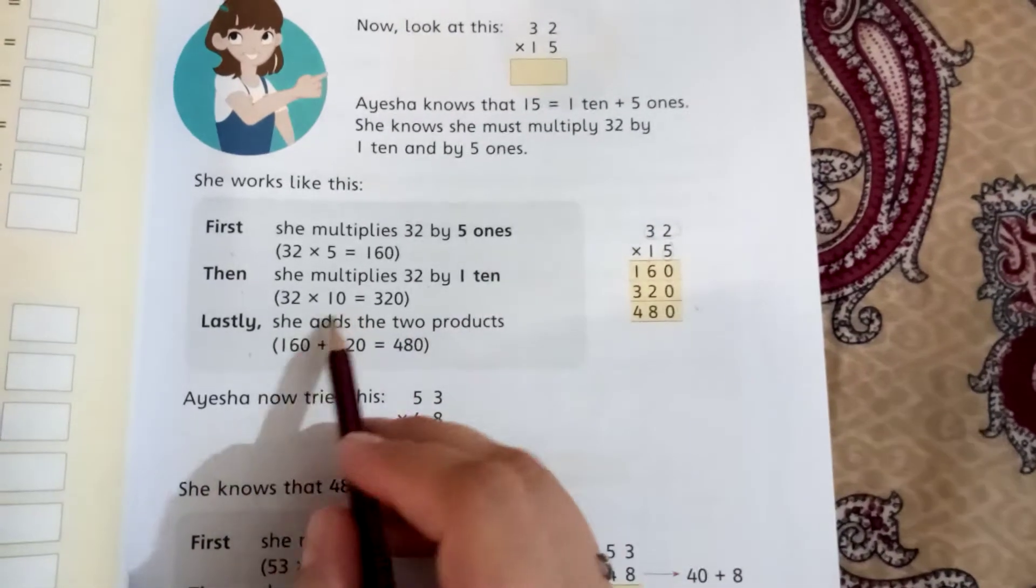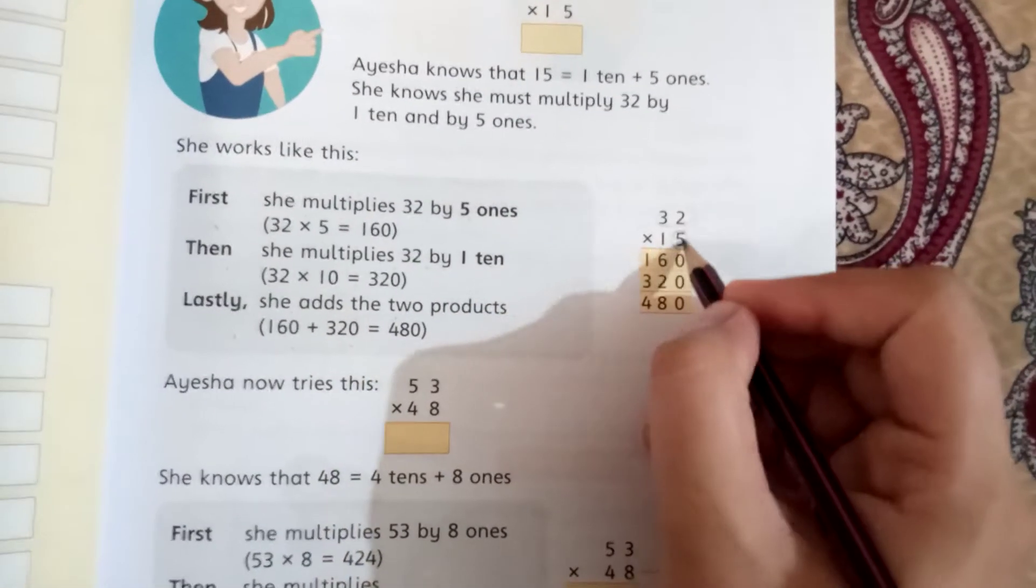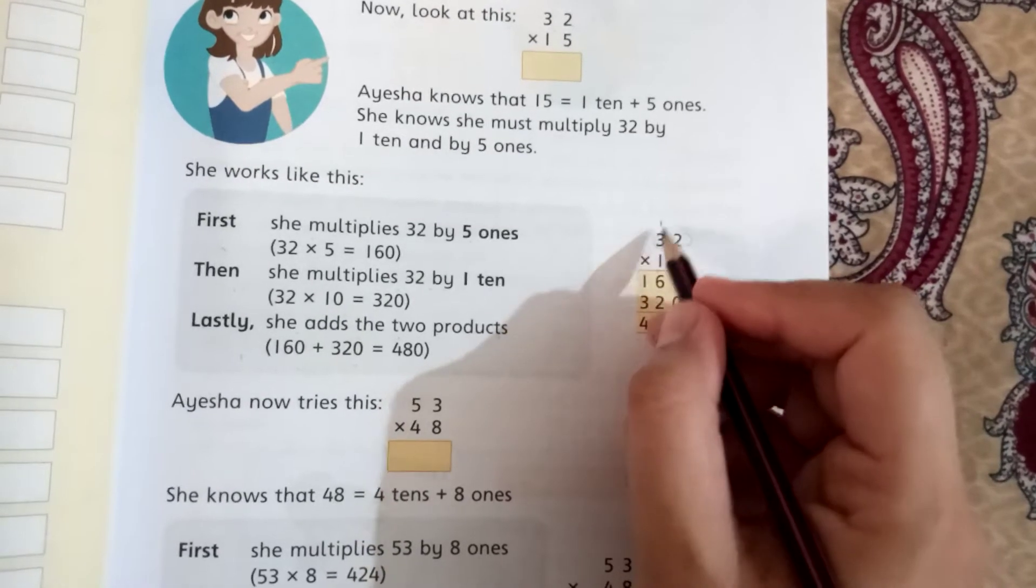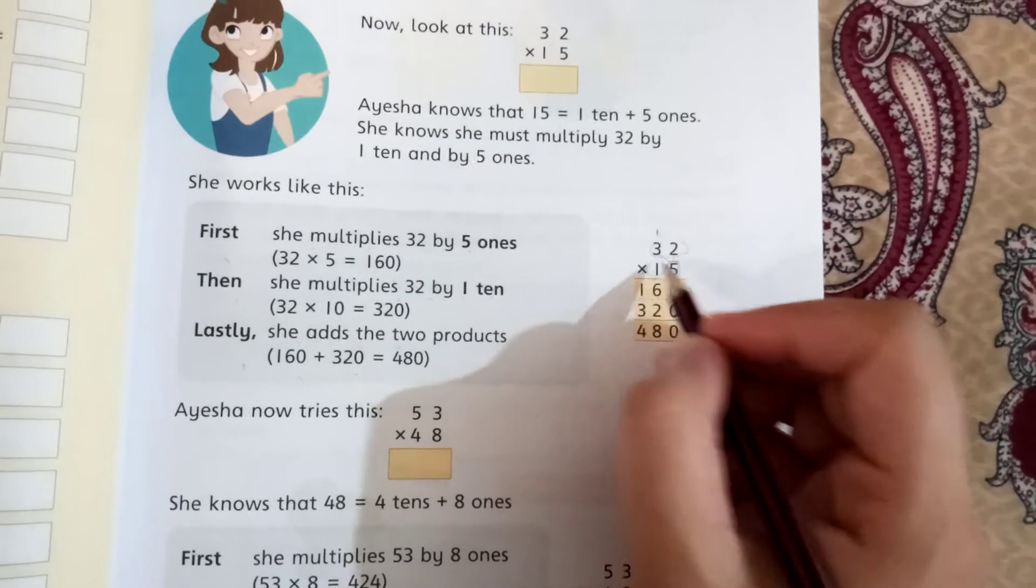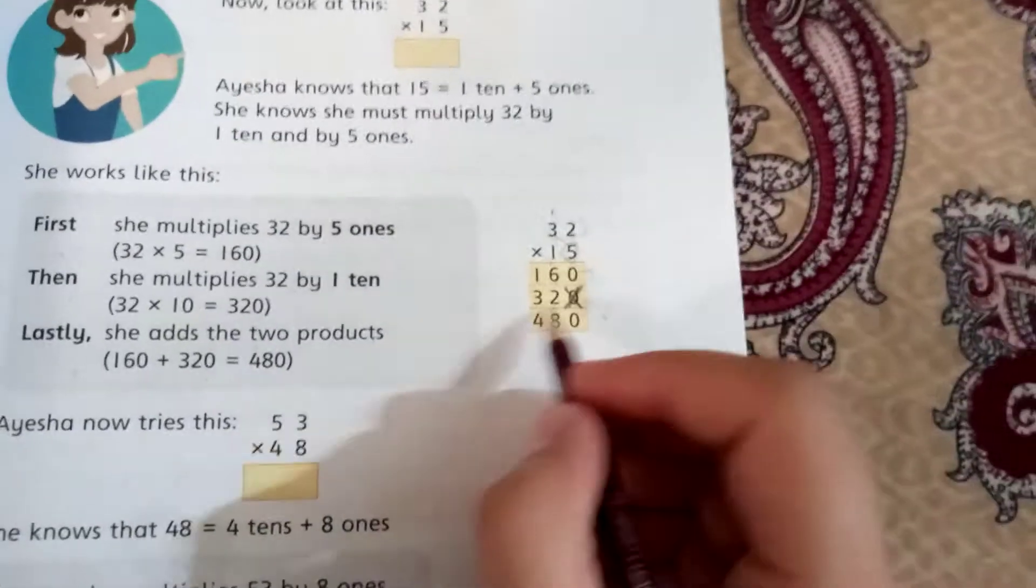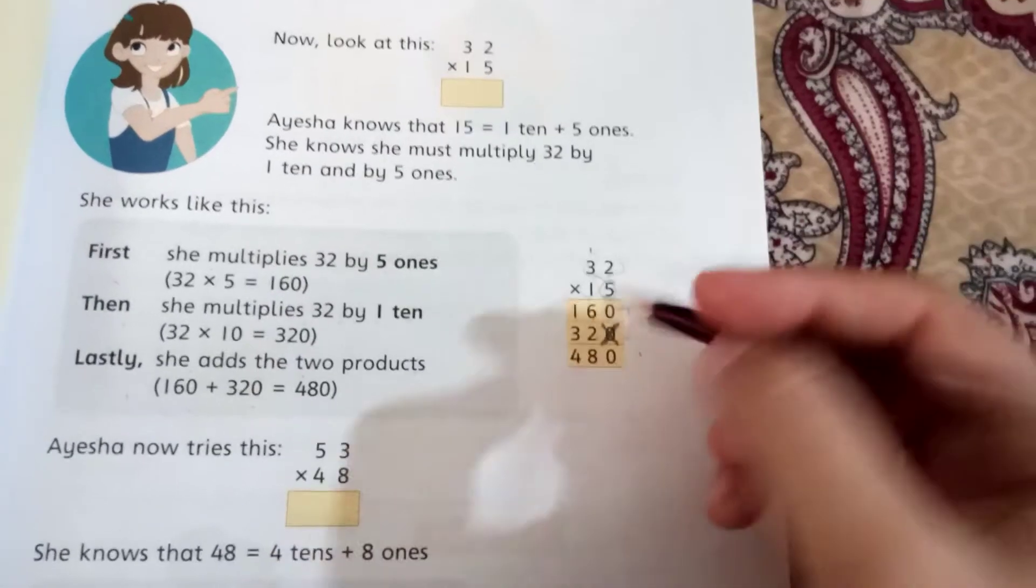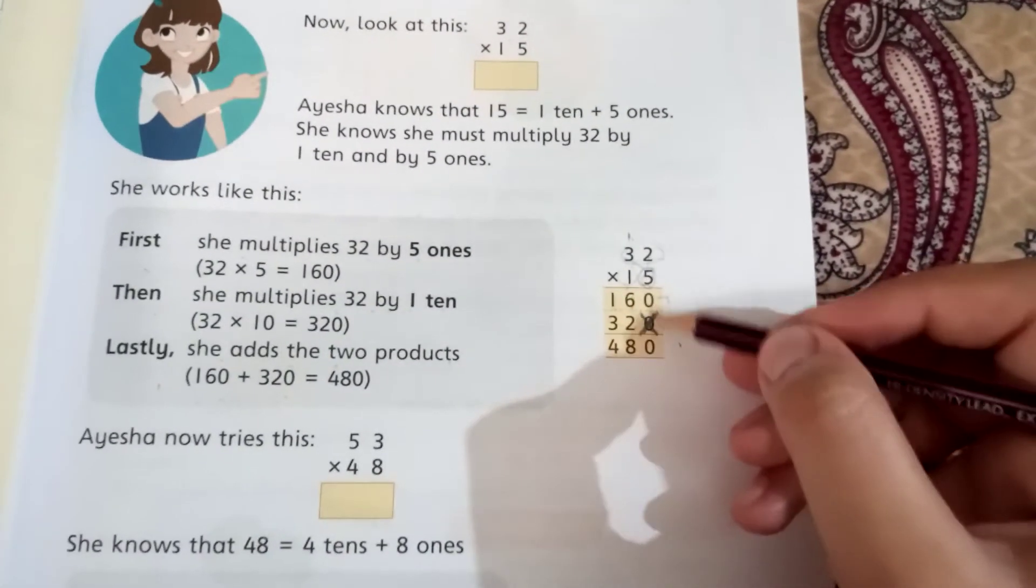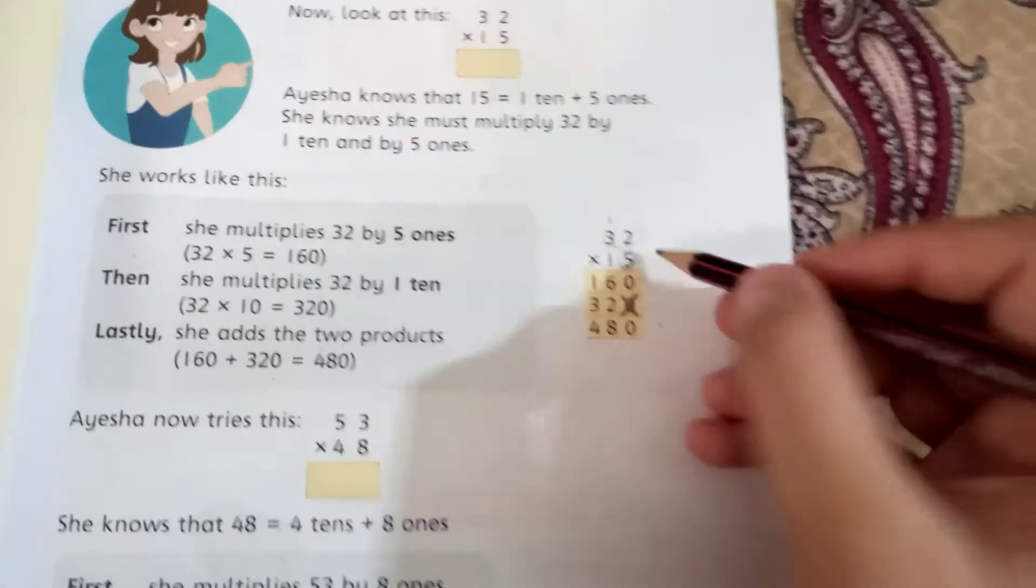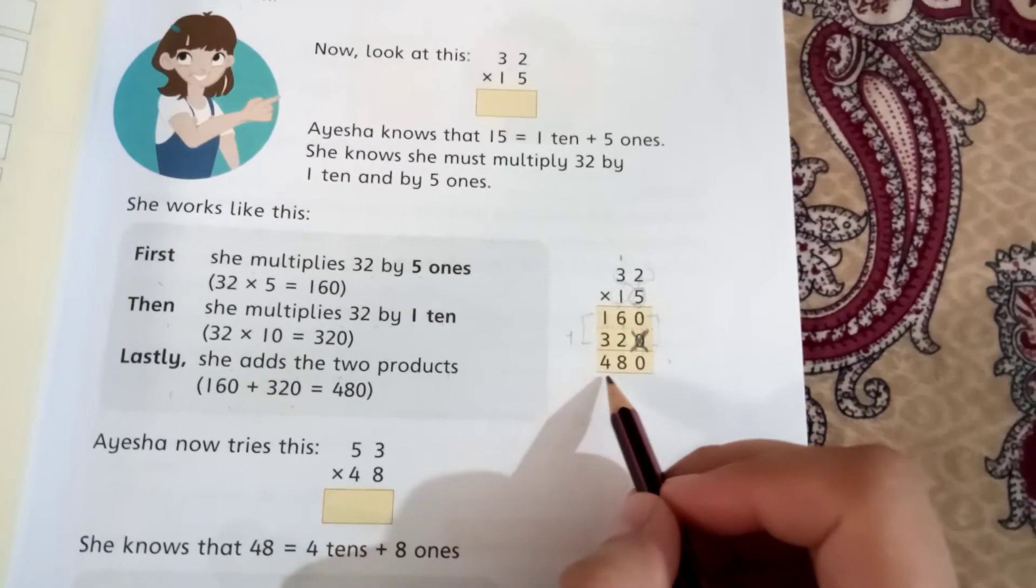First we multiply 32 by 5: 5 times 2 is 10, write 0 and carry 1; 5 times 3 is 15 plus 1 is 16. Then we multiply 32 by 1 ten. When we start the next number, we add 0 or cross. 1 times 2 is 2, 1 times 3 is 3. Now you have to remember the numbers are below the numbers.